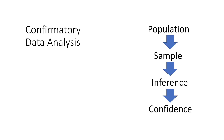That is confirmatory data analysis and that is the domain of traditional statistics. It is very important when you want to say with a certain amount of certainty that this is happening, or how confident you are in your predictions. It's one thing to say the average is such and such, and it's another thing to say the average is such and such and here is my confidence interval, so the person receiving that information has more context within which to see the data.